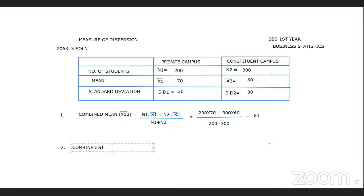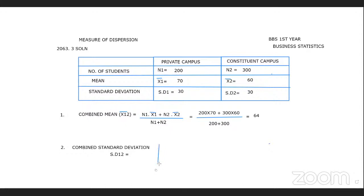Now we calculate the combined standard deviation. There is a specific formula for this. It involves n1 brackets SD1 squared plus D1 squared, where D1 is the deviation of each group mean from the combined mean.